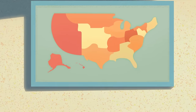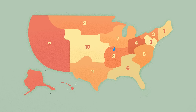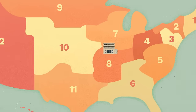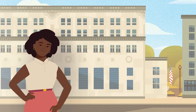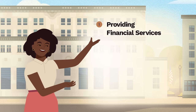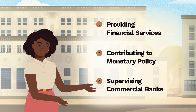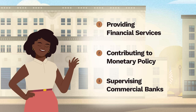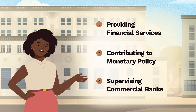Before we do that, let's follow this Reserve Bank president back to the office to see what goes on there. Buckle up, we're headed west. In all, there are 12 districts in the Federal Reserve, and each is served by a regional reserve bank. Many also have one or more branches. Reserve banks have three main responsibilities: providing financial services, contributing to monetary policy, and supervising commercial banks. We'll take a look at each of these activities one by one.